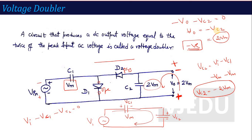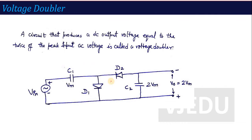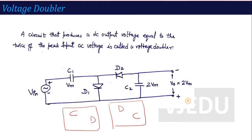To summarize the Voltage Doubler concept: the clamper detail taught earlier explains how the capacitor charges. In simple terms — during the positive half cycle, D1 conducts, D2 does not, and C1 charges to VM. During the negative half cycle, because both the negative input voltage and C1 (charged to VM) are in series, C2 charges to double the voltage — 2VM. So the output voltage across C2 is twice the input voltage. This is the Voltage Doubler concept.